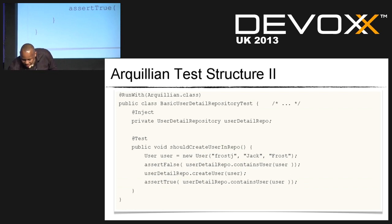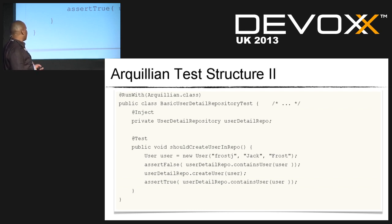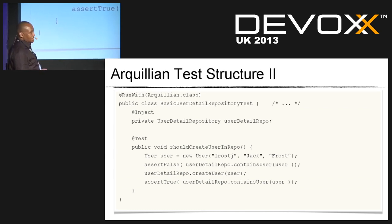The unit test can inject a CDI bean — our UserDetailRepository. Then we have a test which everyone familiar with JUnit will understand: we create a user, do some assertions, perform the action, and do another assert. We test that the user does not exist in the repository already, then do the act, then assert. Simple.